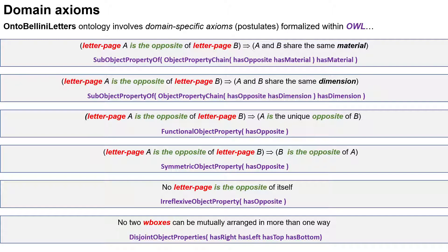Finally, the last axiom concerns the mutual arrangement of text parts lying on the same side of a letter sheet in terms of writing orientations. Text parts are conceptually wrapped within rectangles — the W-boxes — and we identify four kinds of arrangement relationships: as-right, as-left, as-bottom, and as-top. The axiom states that two text parts can be arranged in at most one way in terms of writing orientations.